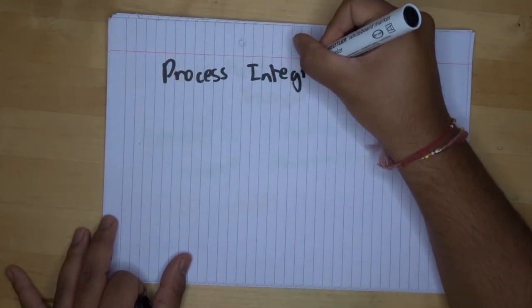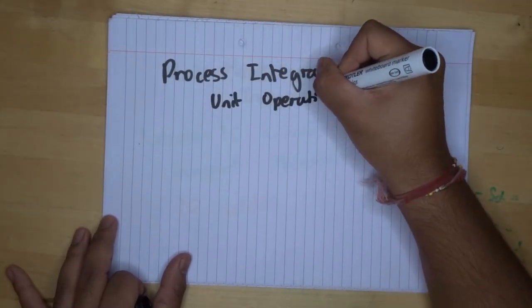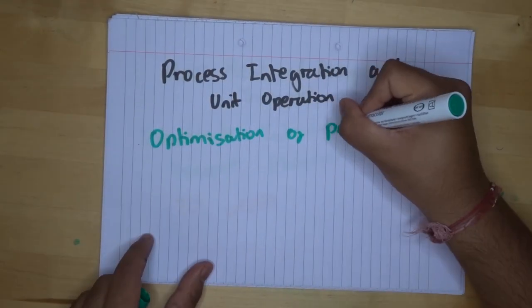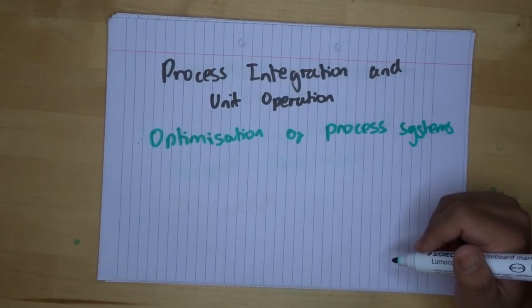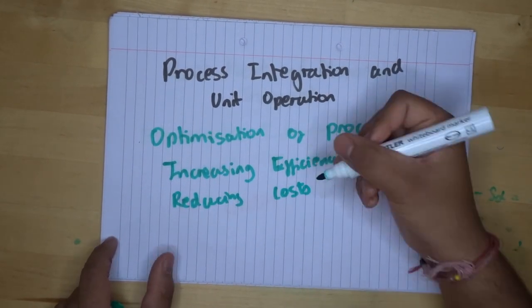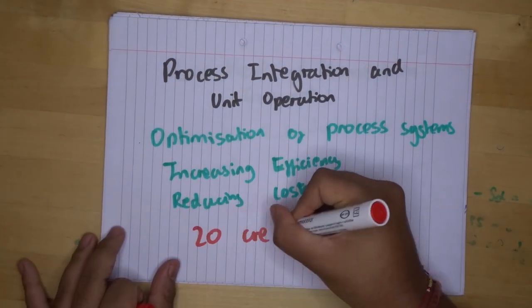This next module is process integration and unit operations. Now, this module is all about optimization of process systems. So you work on how to increase the efficiency and reduce the cost of different processes. And this module is made up of 20 credits.